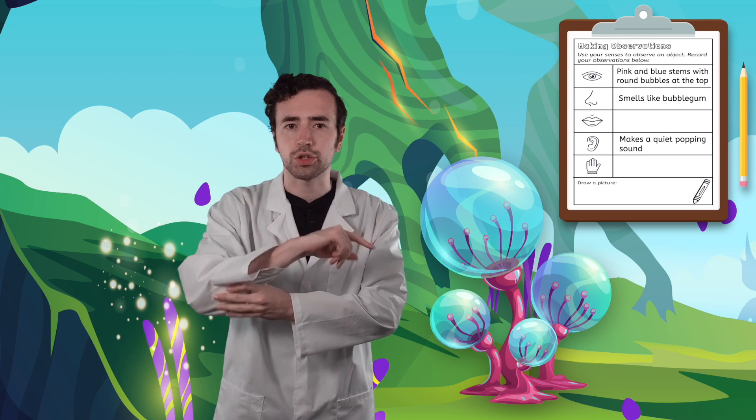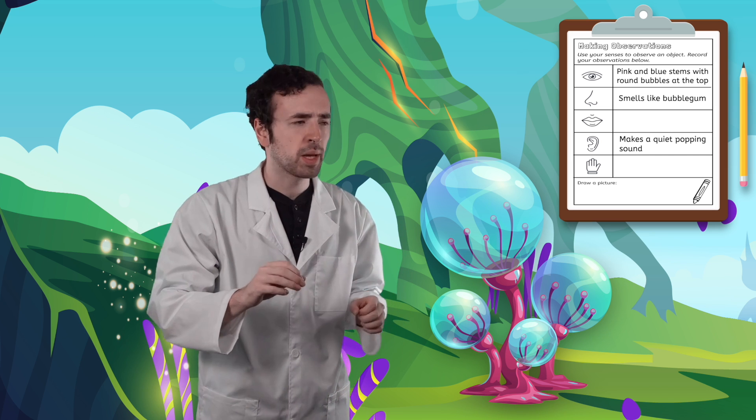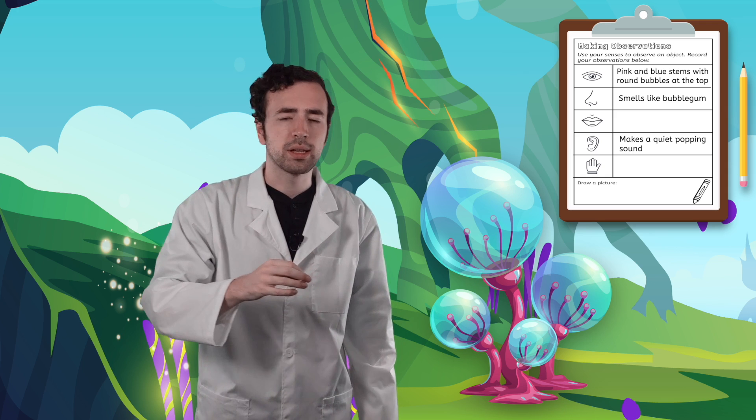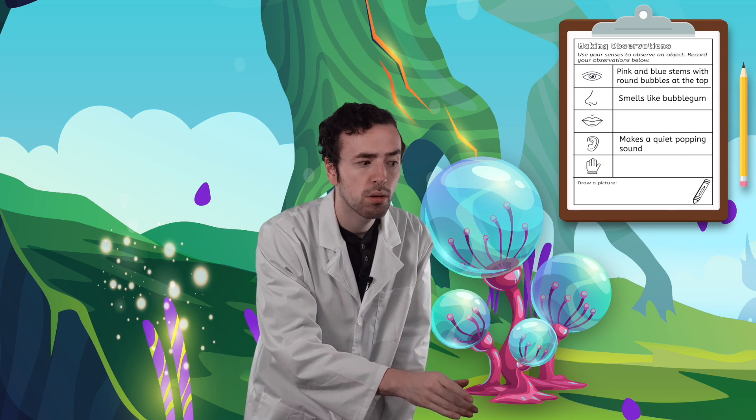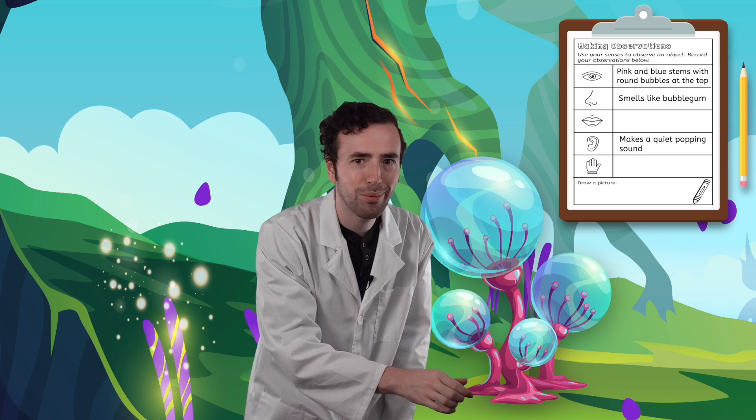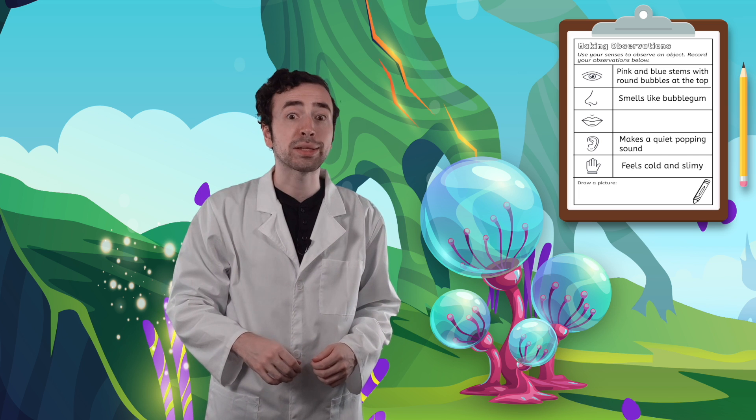For my last observation, I'm going to use my sense of touch to learn about this plant. I need to be extra careful here though because the bubble on this plant looks very delicate. Let's see what the bottom of the plant feels like. It feels cold and slimy. I wonder why the plant is cold when the air is so warm. Let's write down our final observation. Feels cold and slimy.